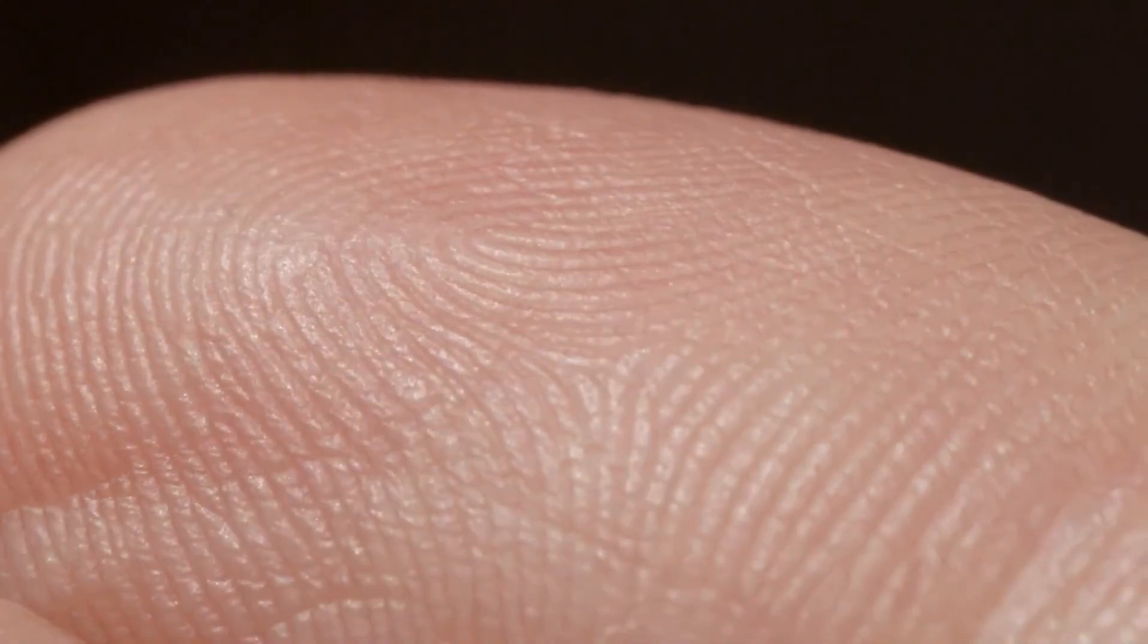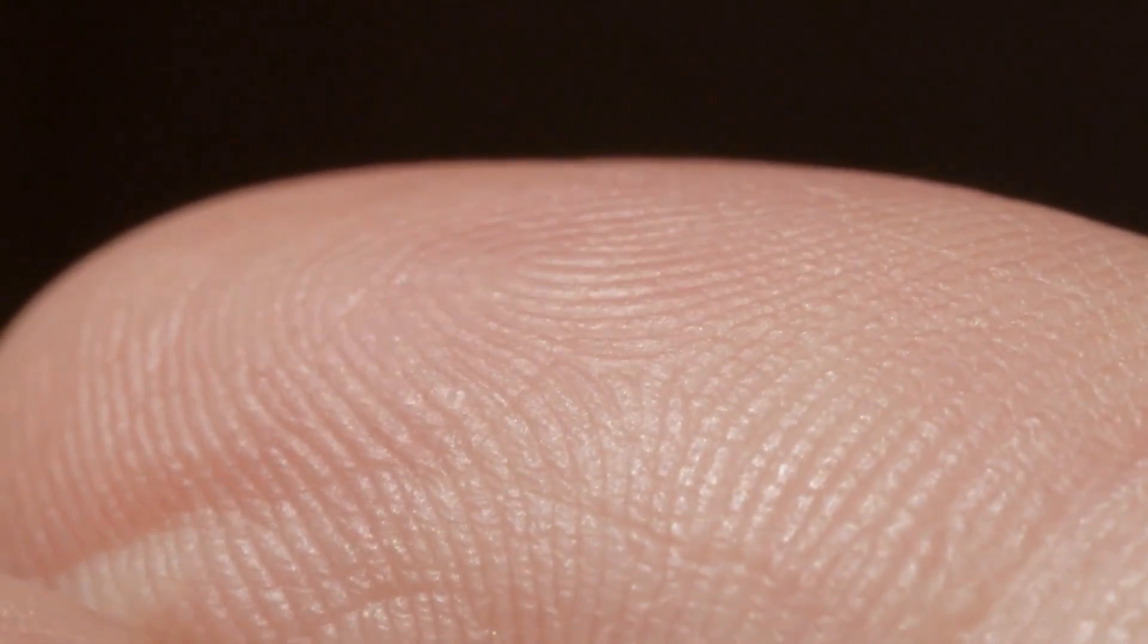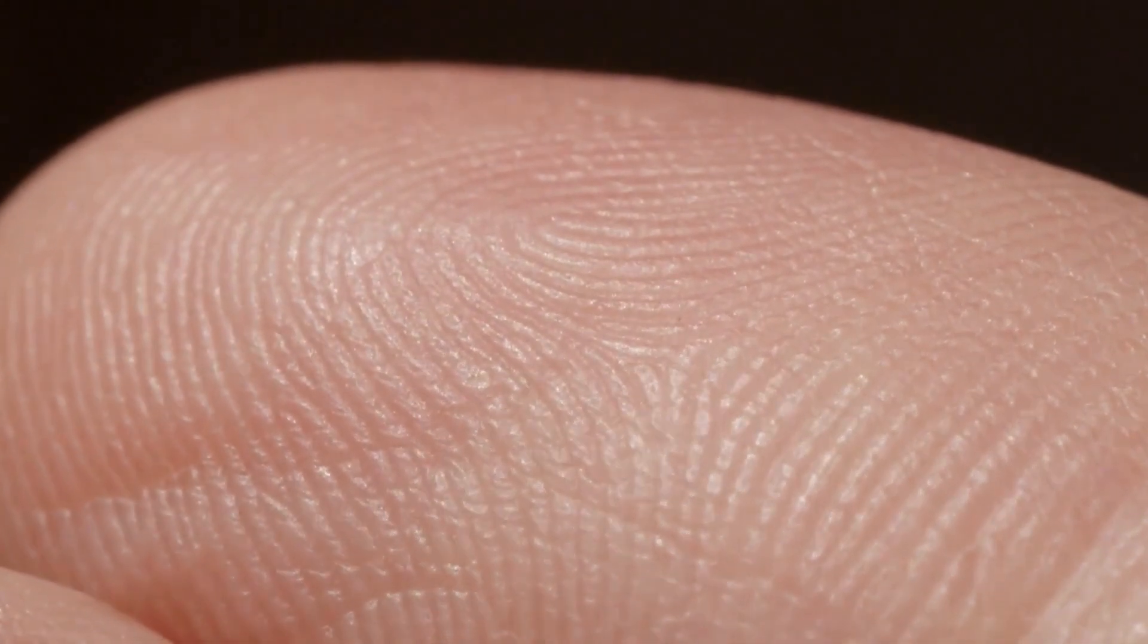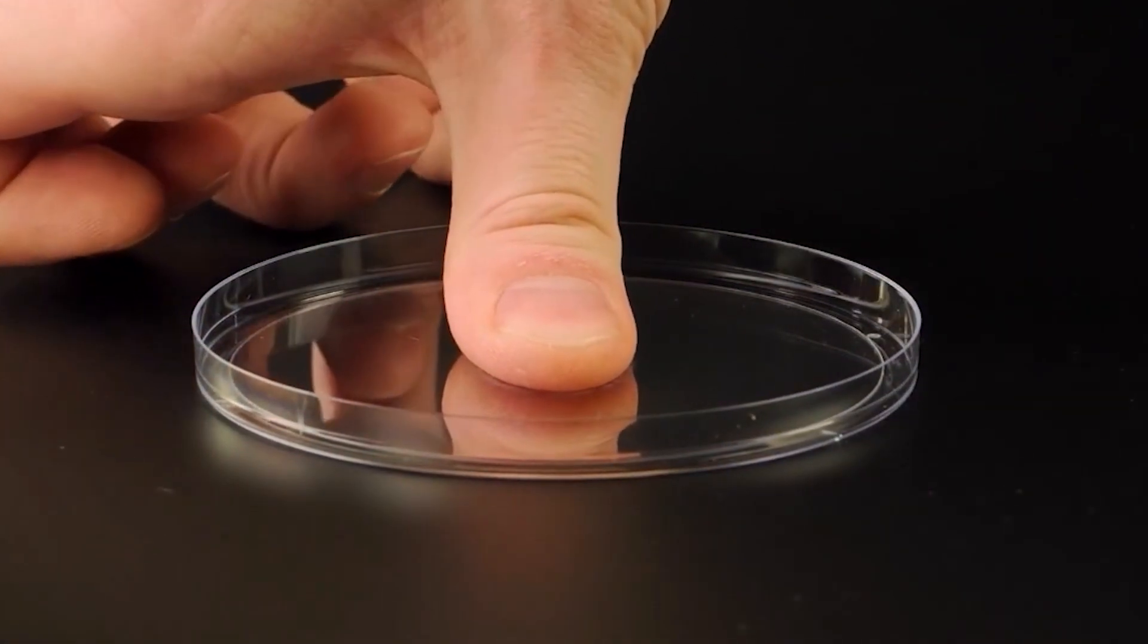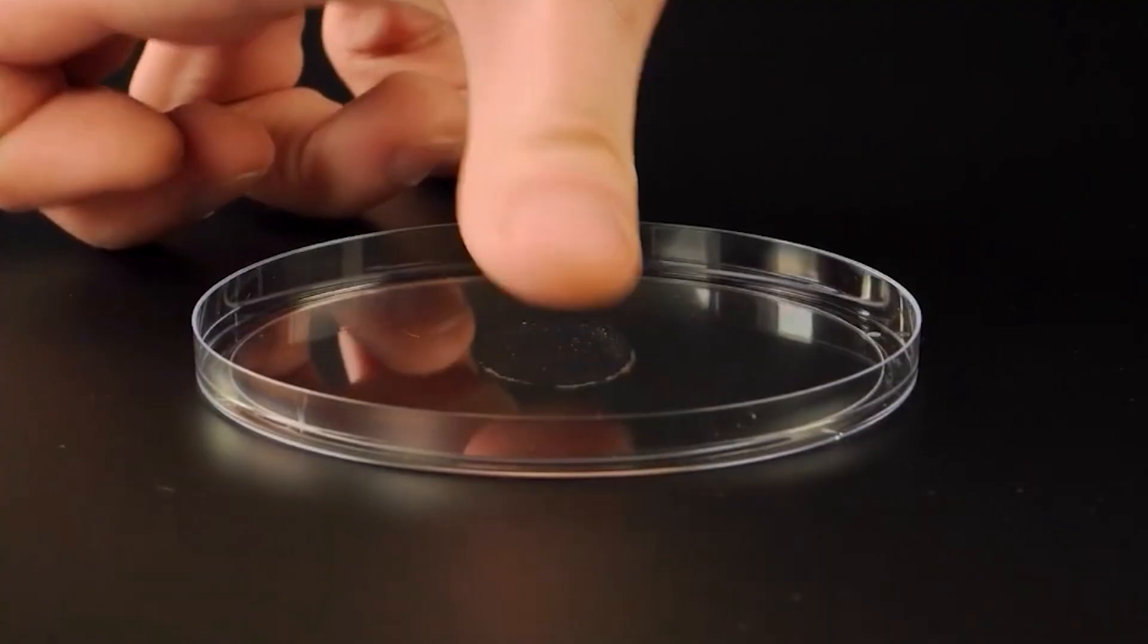Fingerprints are formed by sweat released from pores present on the friction ridge skin of hands and fingers. When the finger touches any surface, the sweat from the pores on the ridges gets deposited in the form of the contours which creates an impression of the ridge pattern.